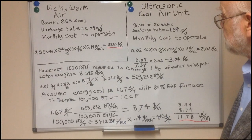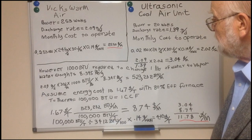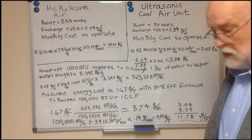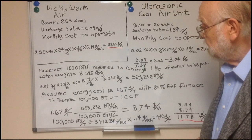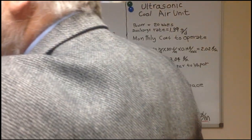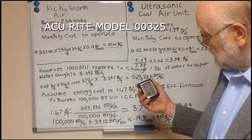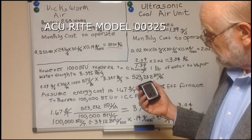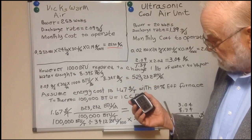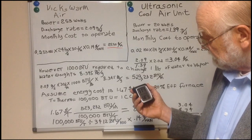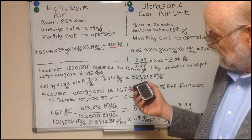That pretty well summarizes the cost comparison between the two units. To keep an eye on the humidity in your house, you need some kind of hygrometer. This is a typical unit we've been using in our house — less than $12 each — and we have three or four of them around the house. It's a combination thermometer and hygrometer. Right now it says the humidity is 31% at 68 degrees.